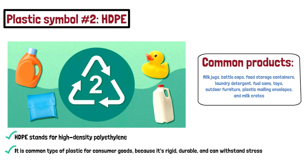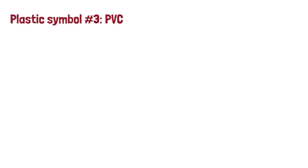Other common products of high density polyethylene include toys, outdoor furniture, plastic mailing envelopes, and milk crates. The recycling symbol with the number 2 indicates high density polyethylene, which you can find on many products.